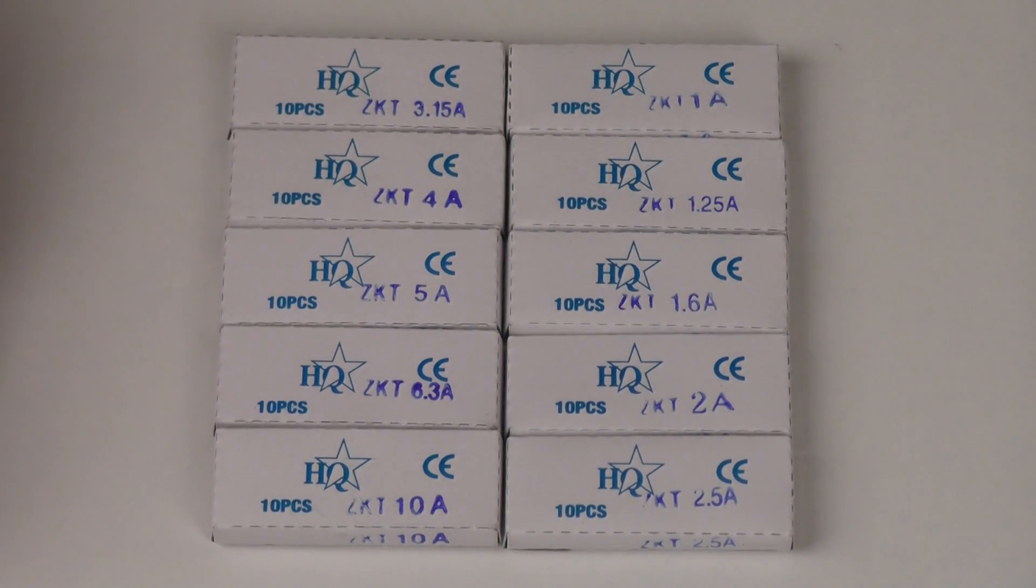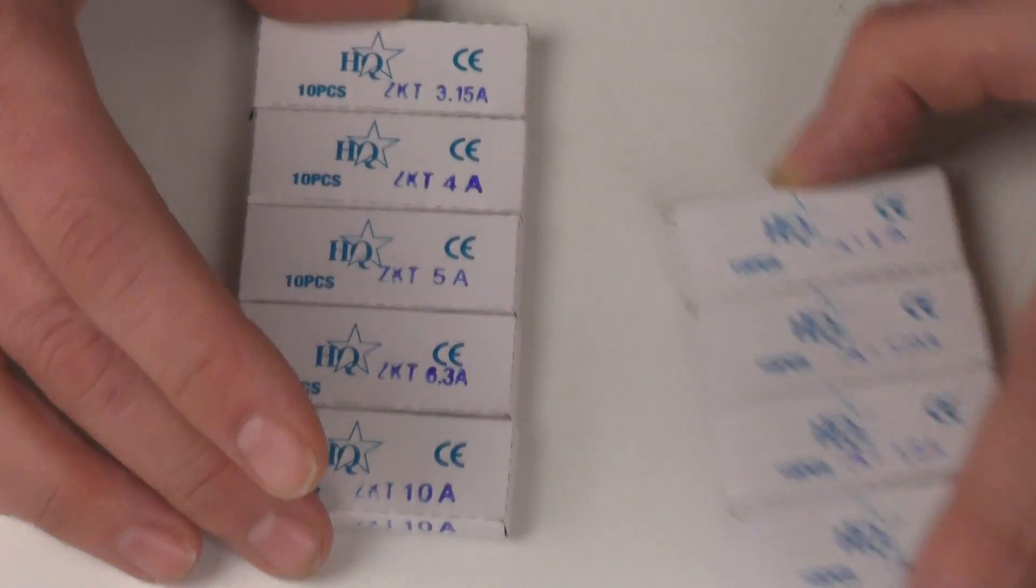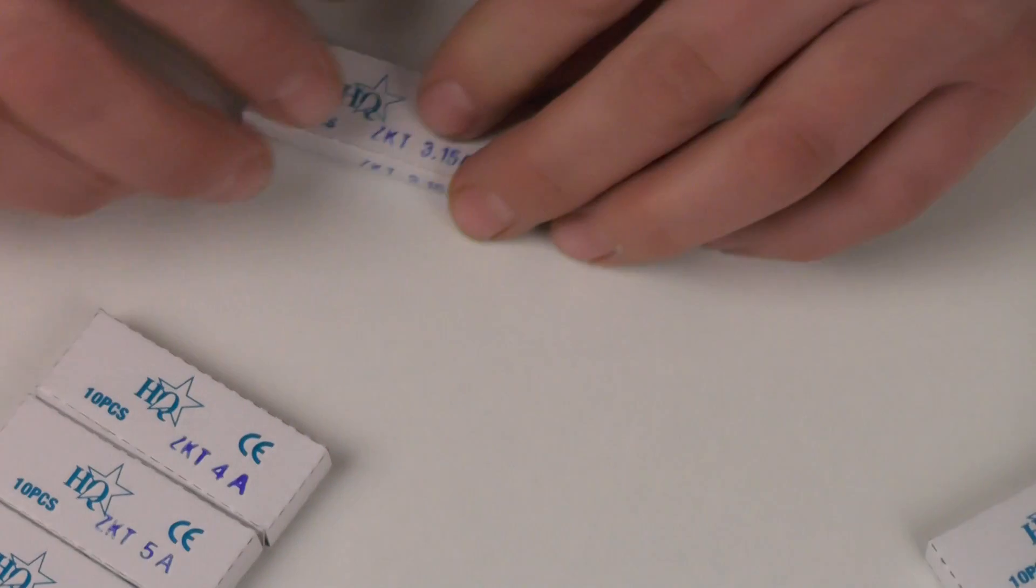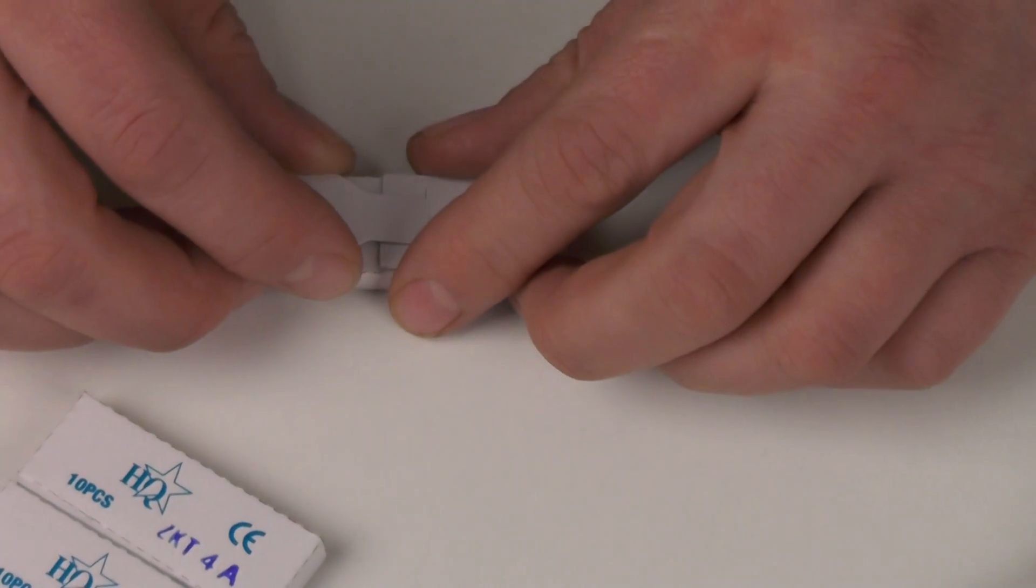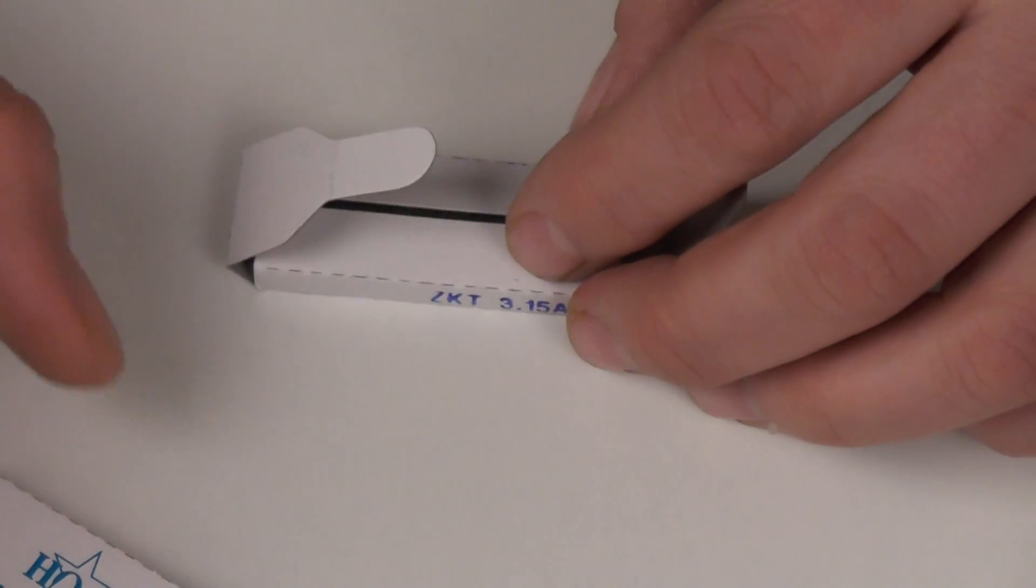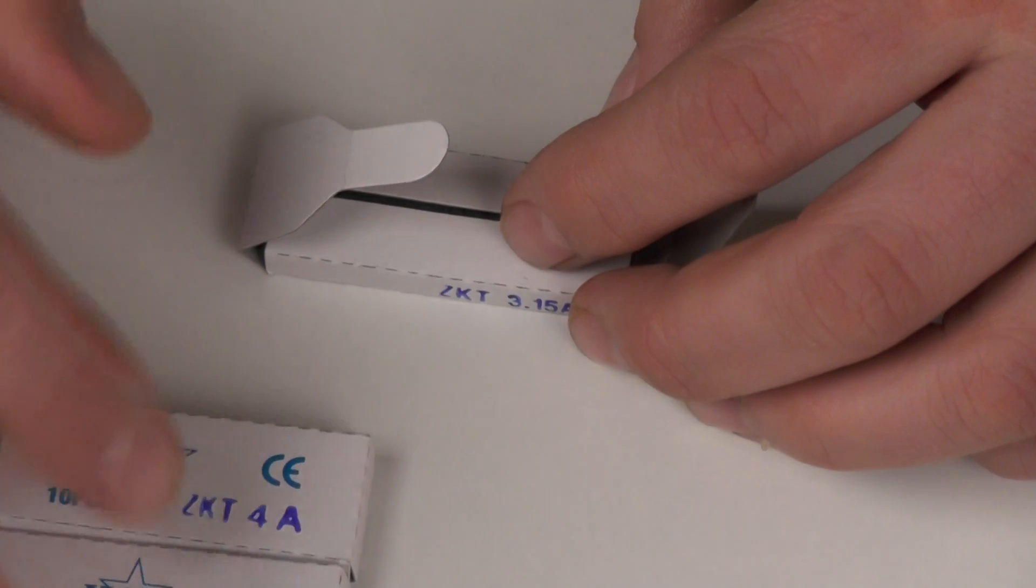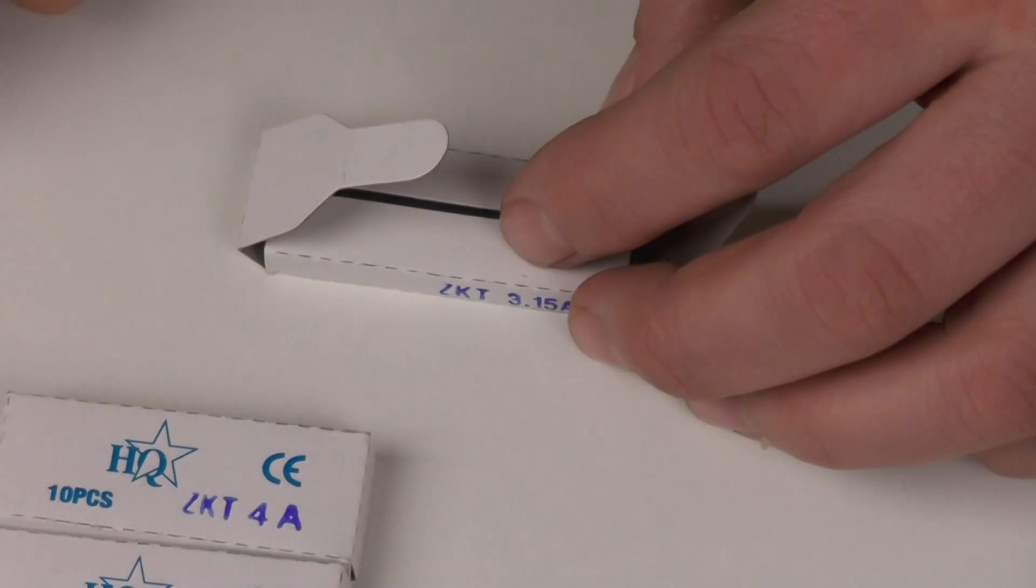You can tell the difference between a fast blow fuse and a delay fuse by looking at the cap of the fuse and you'll find that you'll either have a T symbol before the value or an F symbol. The T symbol means delay. This T symbol can actually be shown or seen on the packet of each of these different values.